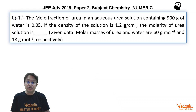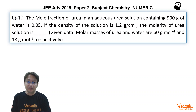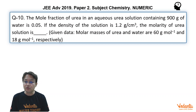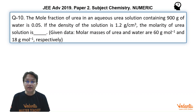In this question, the mole fraction of urea containing 900 grams of water is 0.05. So that means mole fraction of water is also given and density of solution is also provided. If the density of solution is 1.2 grams per cc, the molarity of urea solution is. So a straightforward question in which we have to relate the molarity to mole fraction and density.